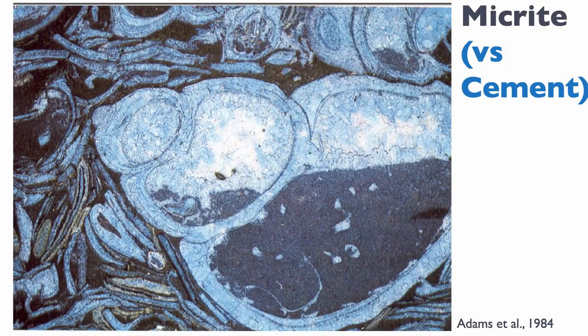Micrite is a carbonate mud. We can also designate as micrite a mix of carbonate mud with clastic clays and silt — that's absolutely fine. On this picture, you can see micrite partially filling a gastropod, forming a geopetal structure. You can see that characteristic dark gray texture of the micrite, and there's a white arrow pointing to places where there is micrite in between the other shell fragments.